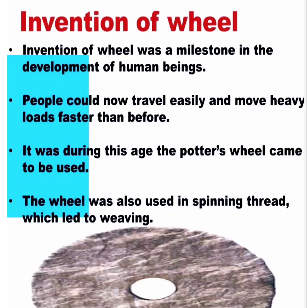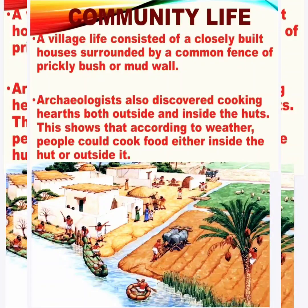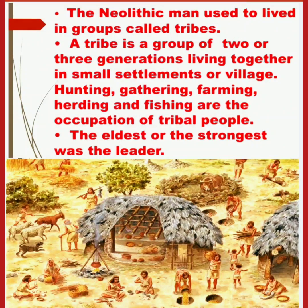The wheel was also used in spinning thread, which led to weaving. A village life consisted of closely built houses surrounded by a common fence of prickly bush or mud wall. Archaeologists also discovered cooking huts both inside and outside the dwellings. This shows that, according to weather, people could cook food either inside the hut or outside it. Neolithic man used to live in groups called tribes.